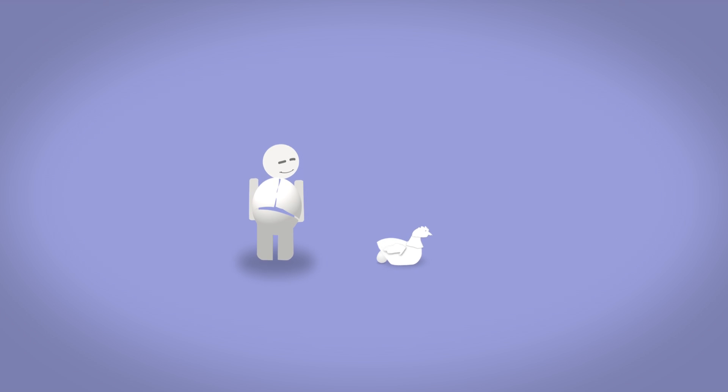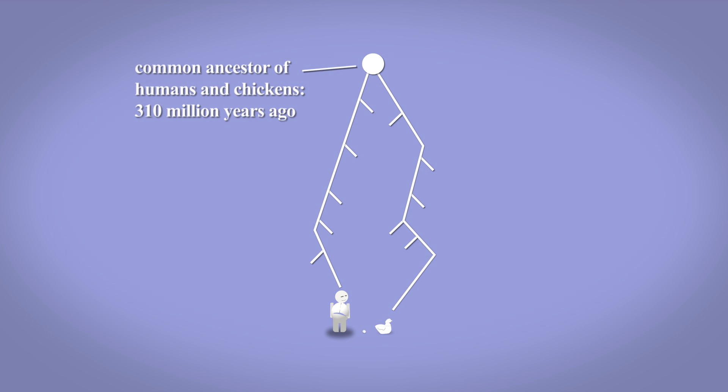This only makes sense if humans and chickens shared a common ancestor long ago. We have thousands of other such non-functional genes and each one tells part of our story as a species. It is very hard to explain these and many other genetic features apart from common ancestry.